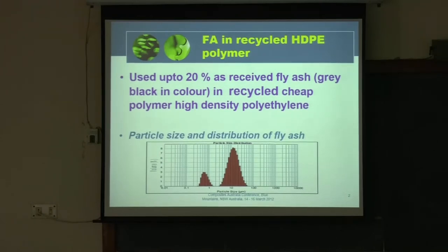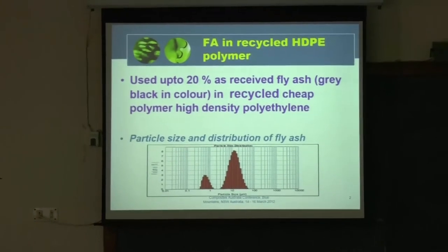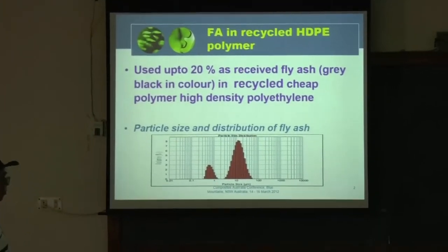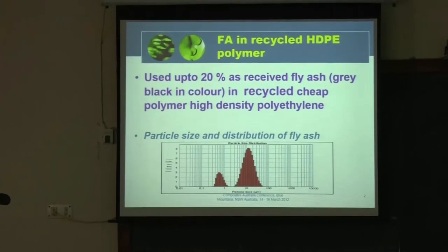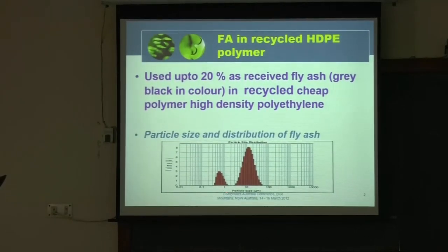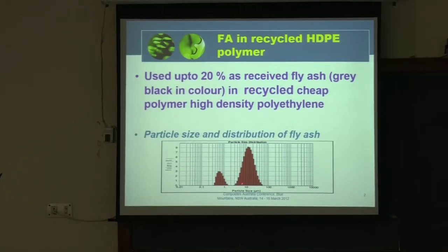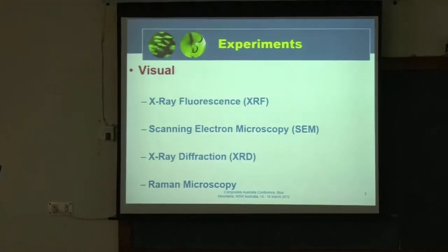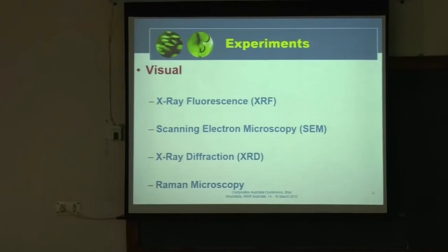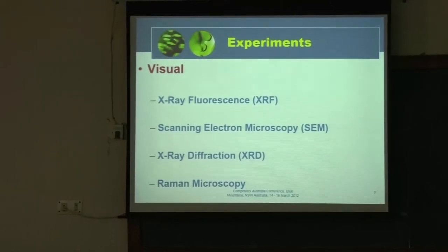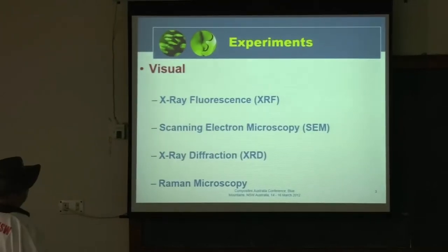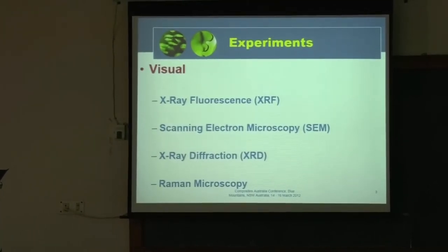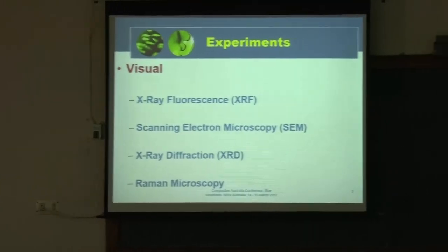This is the particle size distribution of the fly ash — a small fraction below 1 micron and up to about 90 microns in the number size distribution. The experiments involved individual characterization as well as mixing of the fly ash. Techniques used were X-ray fluorescence, scanning electron microscopy, X-ray diffraction, and Raman spectroscopy. In past lectures we have not mentioned Raman much, but Raman spectroscopy gives another kind of bonding information.